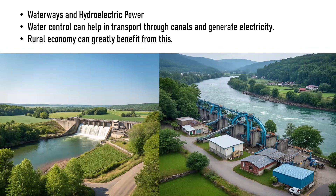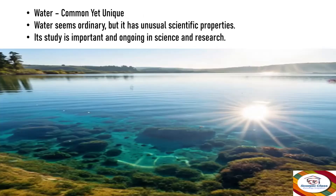C.B. Raman also talks about waterways and hydroelectric power. Water control can help transport goods through canals and generate electricity. The rural economy can greatly benefit from internal waterways and the generation of electricity through controlled water flow.